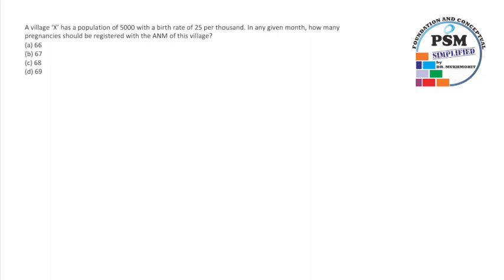A village X has a population of 5000 with a birth rate of 25 per thousand. In any given month, how many pregnancies should be registered with the ANM of this village? You can see the options are pretty close: 66, 67, 68, and 69.